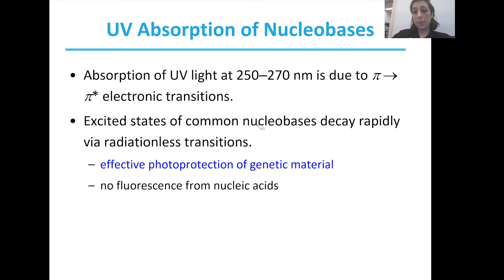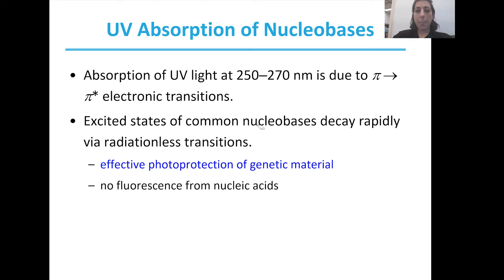This comes from a transition — a pi to pi star electronic transition that causes this peak to occur at 250 to 270 nanometers. And this excited state, where the molecule absorbs this UV light, does decay very rapidly, and it decays in a way that is without radiation.